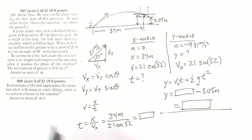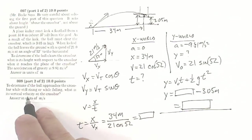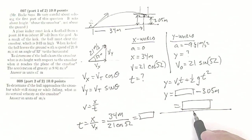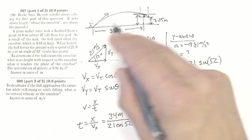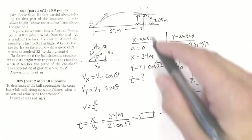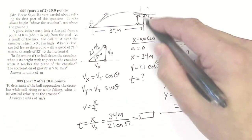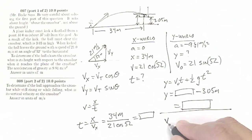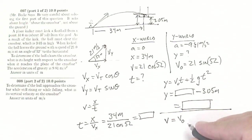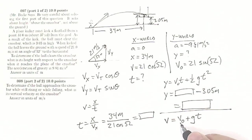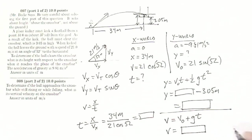Question number eight: to determine if the ball approaches the crossbar while still rising or while falling, what is its vertical velocity at the crossbar? I want to know if the ball is still on its way up or has gone up and come back down. To get the final velocity at that point in time, I use: final velocity equals initial velocity — which is 21 sine 52, and that's positive — plus acceleration times time. Remember, my acceleration is negative. Whatever sign you get, positive or negative, that is your answer for question number eight.